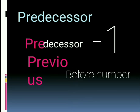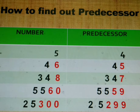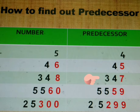How to find out predecessor? The given number is five. Five's predecessor is four. And forty-six — in the number forty-six, when we subtract one, forty-six's predecessor is forty-five. In three hundred and forty-eight, there are eight ones. Eight before is seven. So, three hundred and forty-eight's predecessor is three hundred and forty-seven.